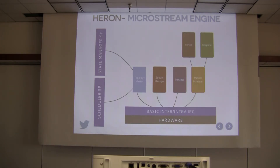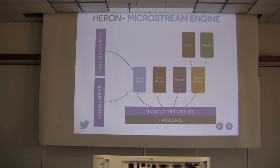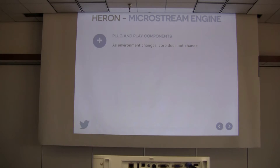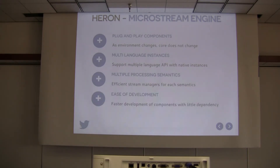For example, you could write a stream manager that uses InfiniBand for low latency and plug it in. The instance — which is your spout and bolt code — is currently written in Java for user-facing Java programs. We're working on a Python API: write a Python native instance, plug it in, and Java and Python topologies can co-exist. The metrics manager is also abstracted so you can send metrics to Graphite, Scribe, or a custom observability stack. Advantages include plug-and-play components, multi-language instances, and faster development iteration.